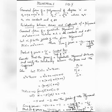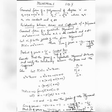Let us see, with the help of examples, how we can find out the zeros of a polynomial and verify the relationship between the zeros and coefficients. Let us see one example: find the zeros of the quadratic polynomial x² + 7x + 10 and verify the relationship between the zeros and the coefficients.